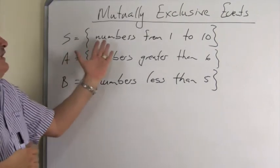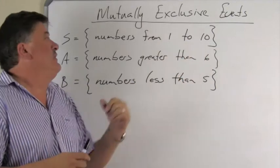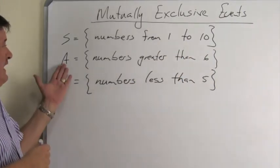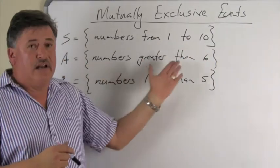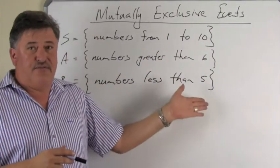The sample space are the numbers from 1 to 10. Event A are the numbers greater than 6. Event B are the numbers less than 5.